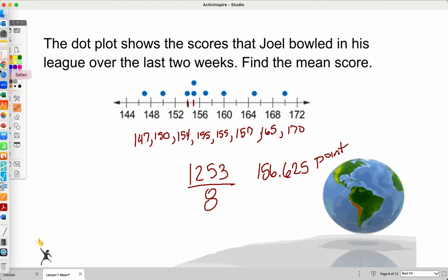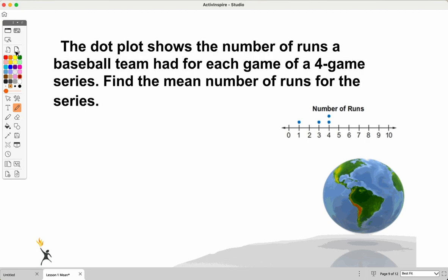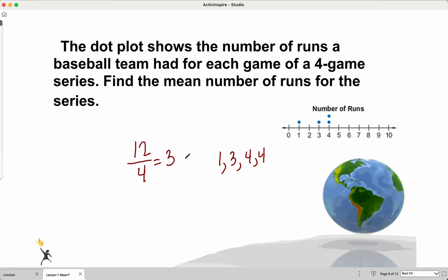All right. So another dot plot. Now baseballs are notoriously low-scoring games. So there's really no need to use our calculator on this one. Find the mean number of runs in the series. So first game, they got one. Second game, they got three. The third game, they got four. And another game, they got four. So don't need to add this up. This ends up being 12. 12 divided by four. So the average number of points scored or runs scored is three runs per game.